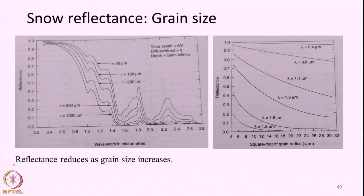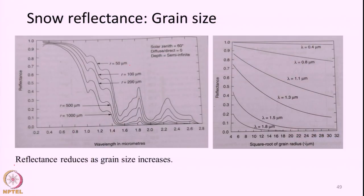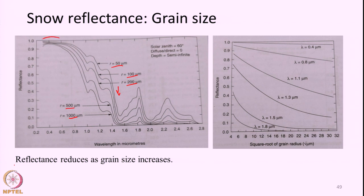This particular slide further emphasizes how grain size influences the spectral reflectance of snow. In the figure on the left side, spectral reflectance of snow with varying grain radius is plotted — the radius starts from 50 micrometers and goes all the way up to 1000 micrometers. We can observe that as the grain size increases, the reflectance keeps on decreasing continuously. The difference is not much in the visible domain but is much higher in the NIR and SWIR domain.